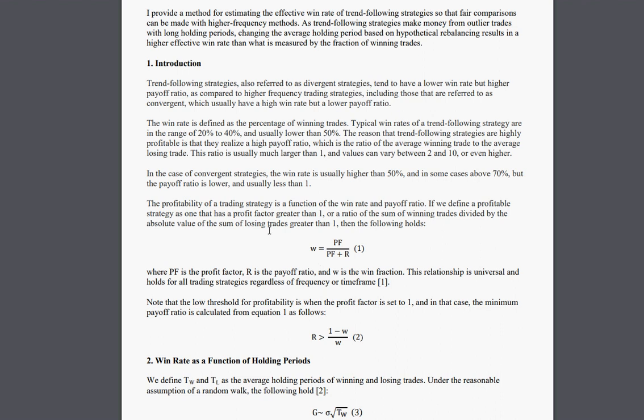This is an exact formula and it holds for all trading systems in all time frames. It's a unique relationship. If we set the profit factor to one, which is the lower threshold for profitability, and we solve this for the payoff ratio, we get that the payoff ratio should be greater than 1 minus the win rate divided by the win rate.